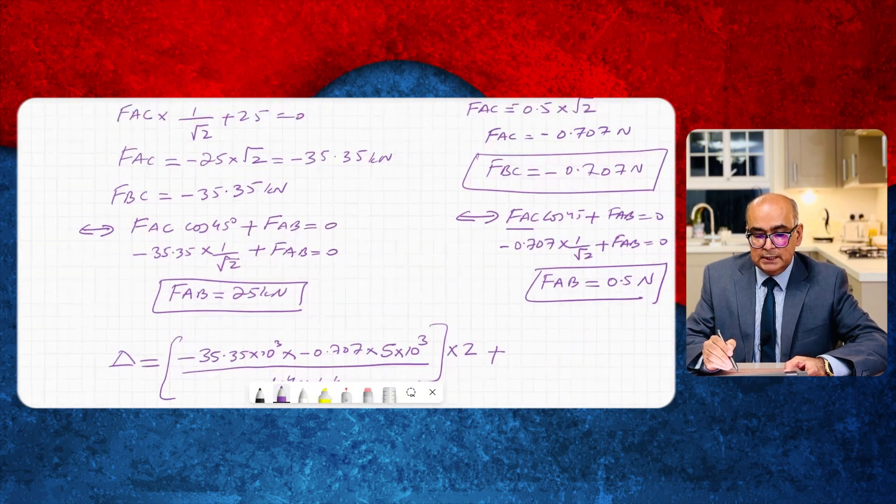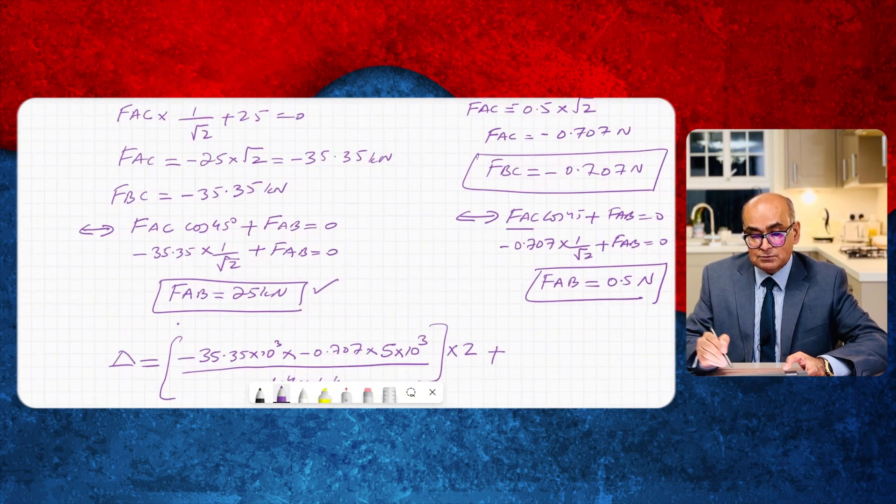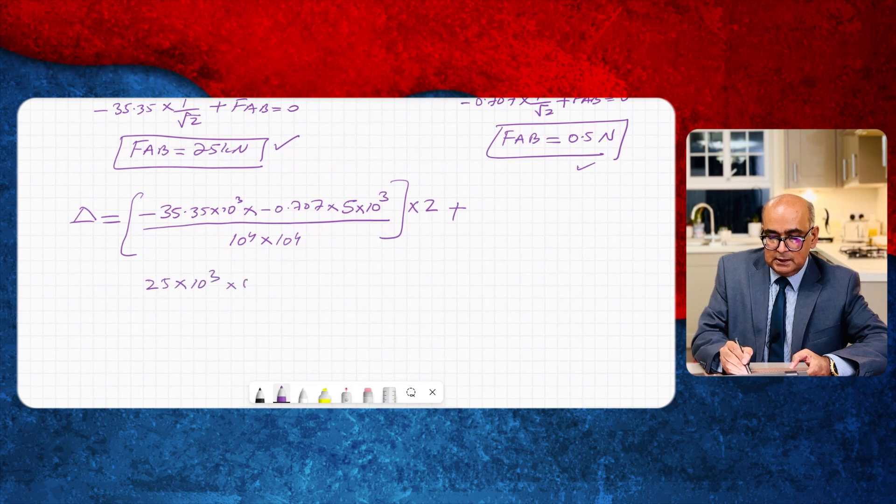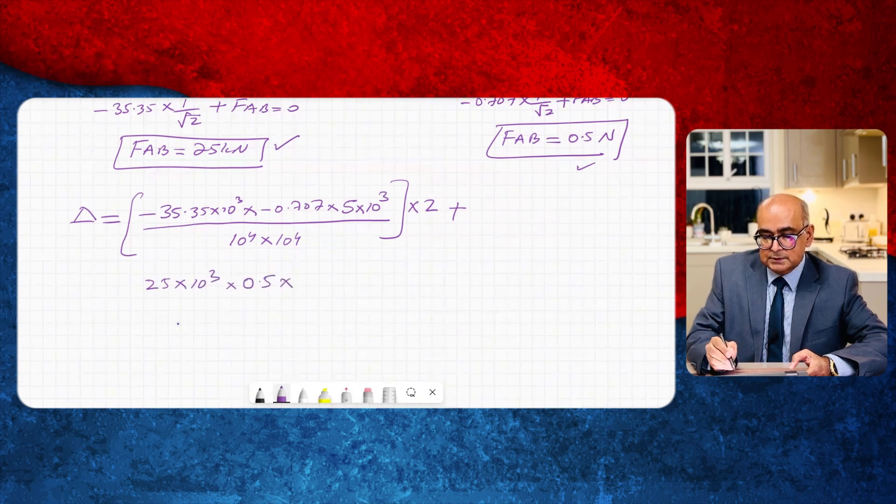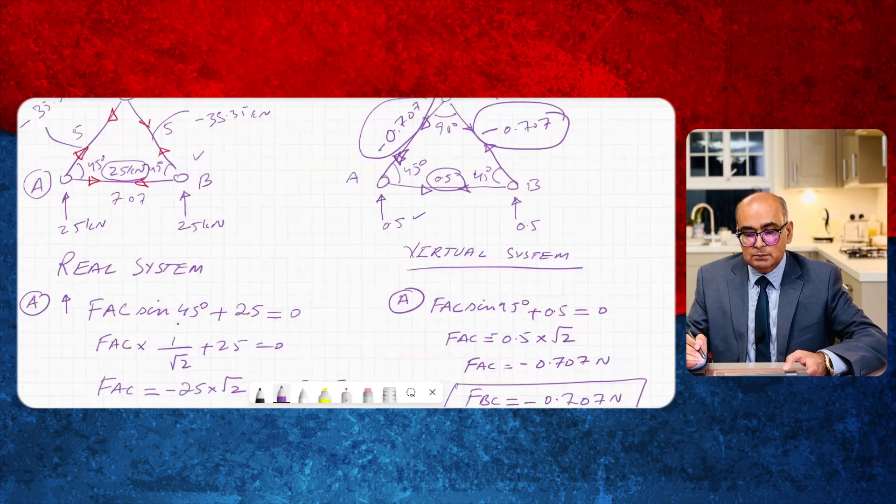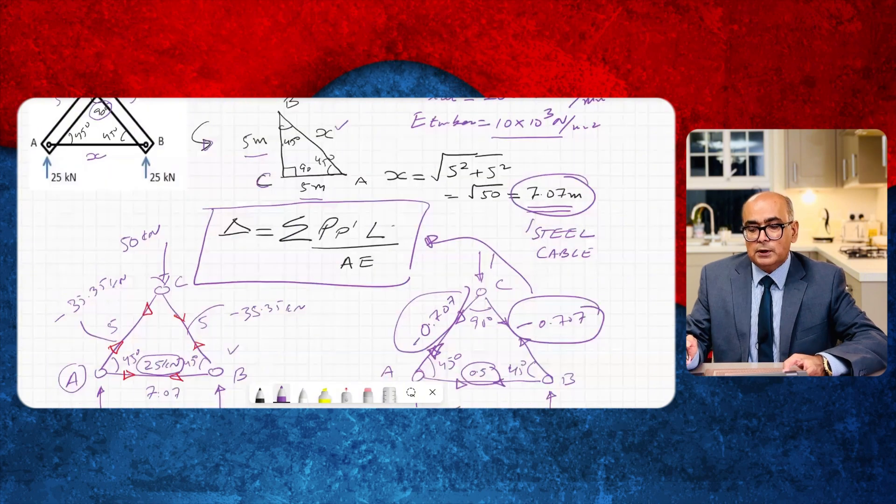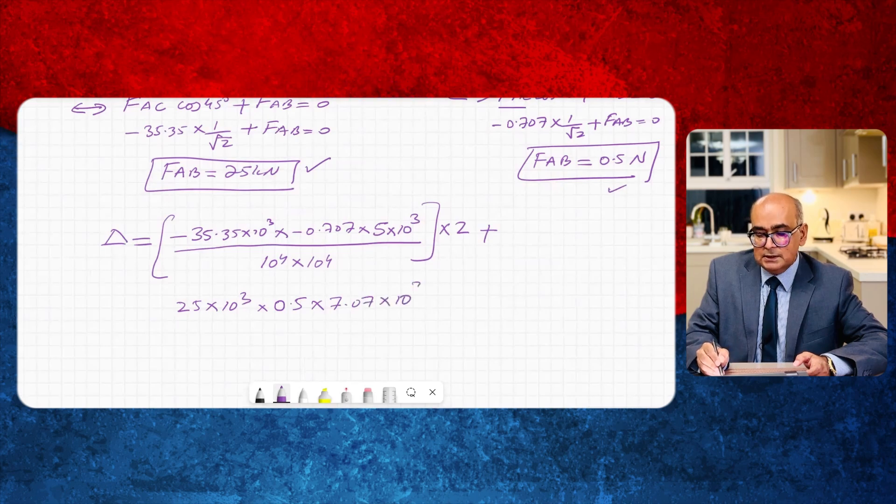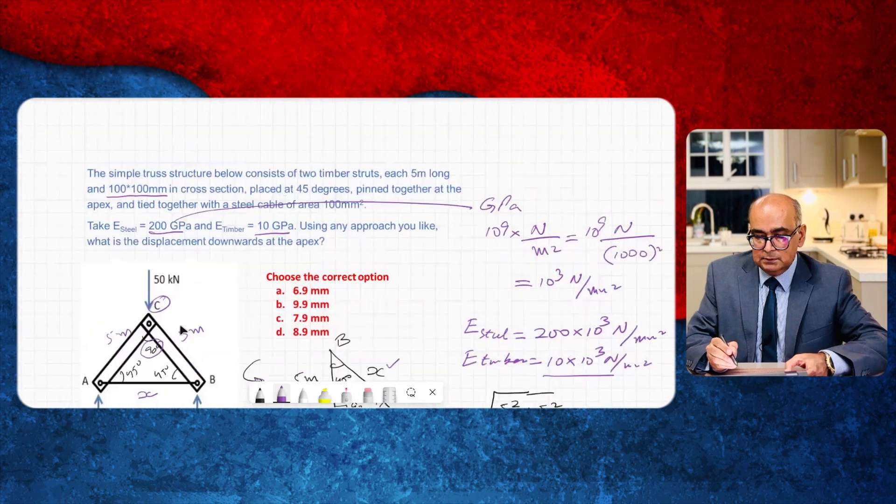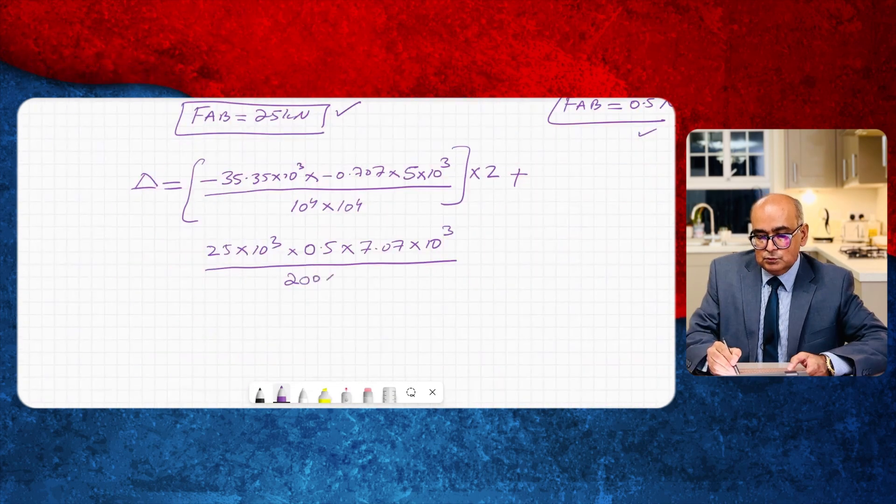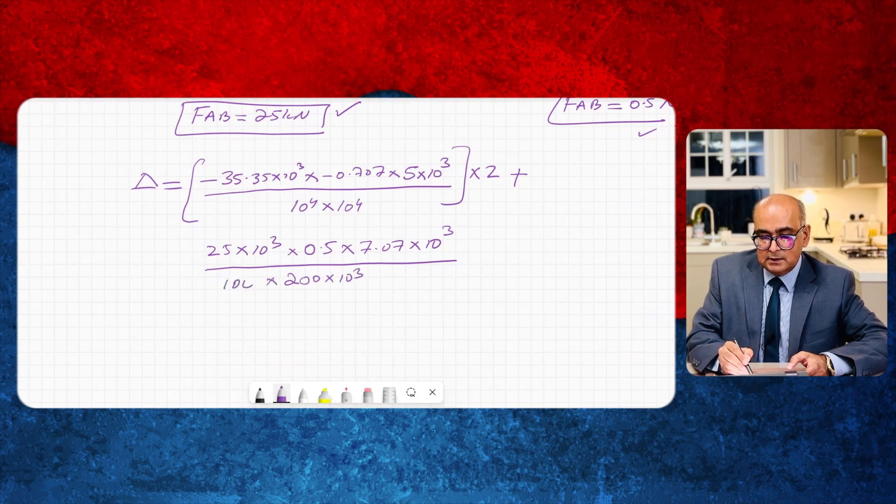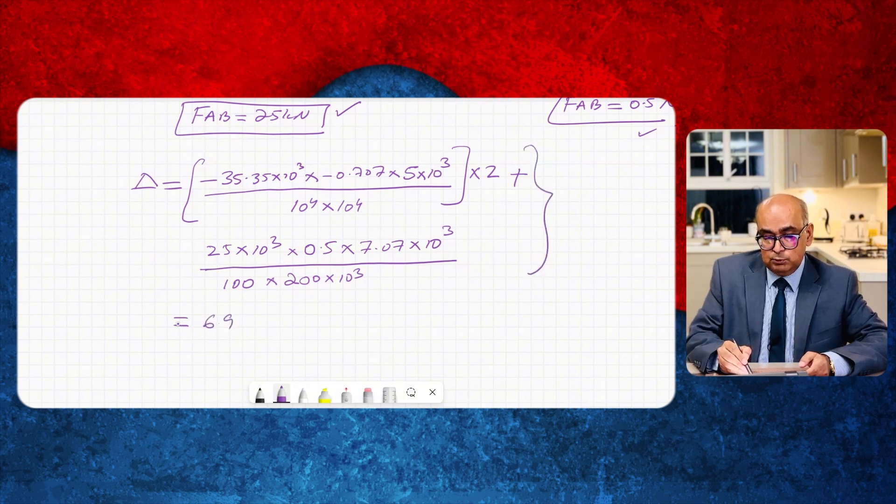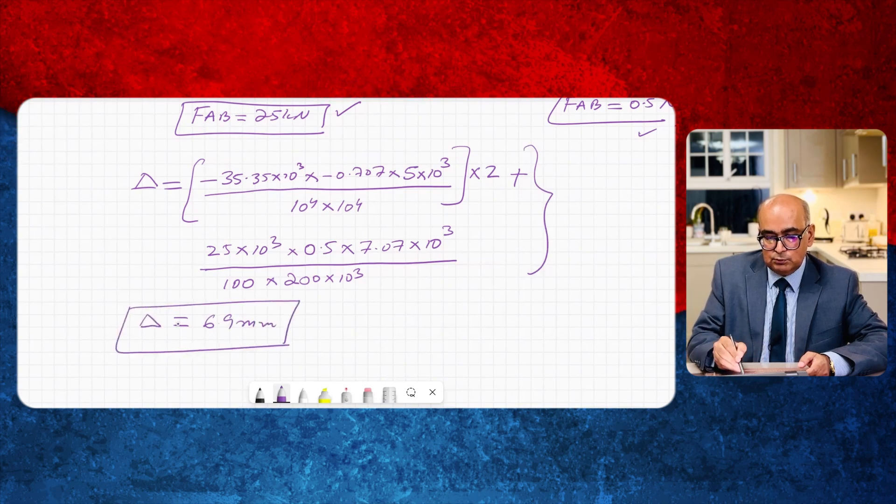And then I have one member which is steel cable. Steel cable has got load in real system as 25 kilonewton. In virtual system it is 0.5. So let's say 25 into 10 raised 3 times 0.5 times the length. The length of the steel cable we found out earlier it was 7.07 meters. So put it over here 7.07 into 10 raised 3 to convert it into millimeters. A for steel cable is 100 millimeters square. So 200 into 10 raised 3 is E and A is 100 millimeters square. When you simplify this entire expression you will get 6.9 millimeter. Delta is equal to 6.9 millimeter.